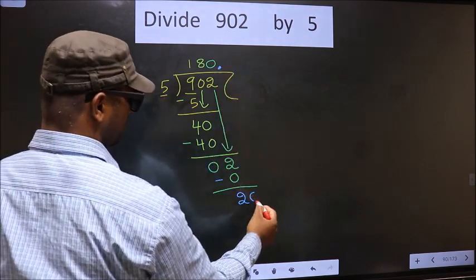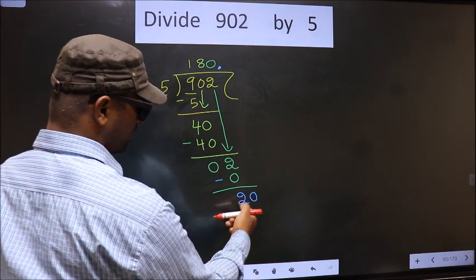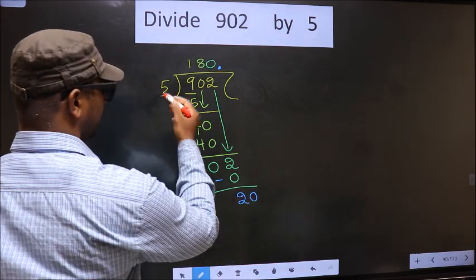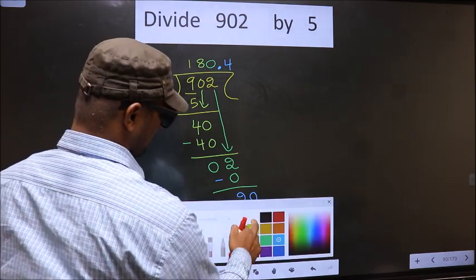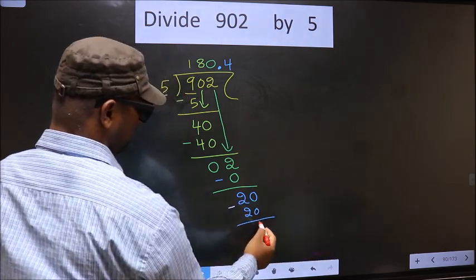So now you can put a dot and take 0 here. So 20. When do we get 20 in the 5 table? 5 times 4 is 20. So now you subtract 20 minus 20.